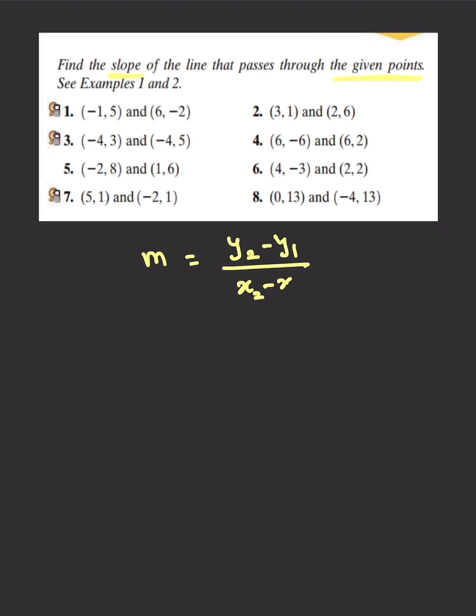Let's get started with the formula for the slope, which is m equals y2 minus y1 over x2 minus x1.